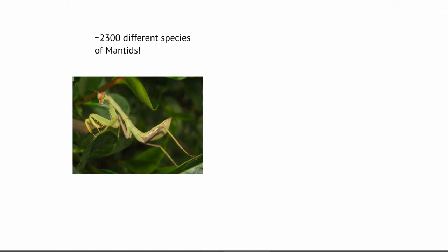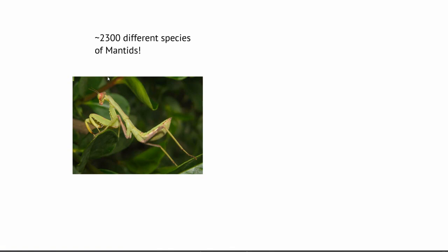Let me give you an example. This is a praying mantid — many of you may see these in your garden. The ones around here are usually about an inch long, with great big eyes and front grabbing legs. They're pretty aggressive predators, with a thorax and abdomen. There are over 2,000 different species of mantids on the planet.